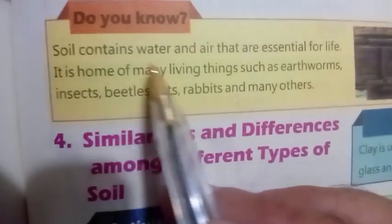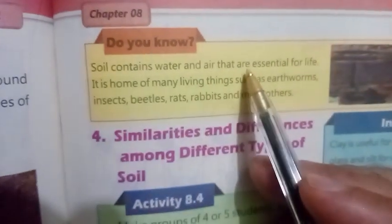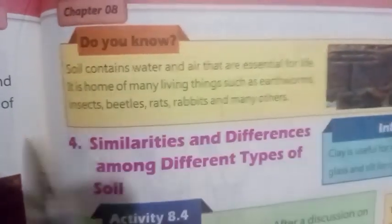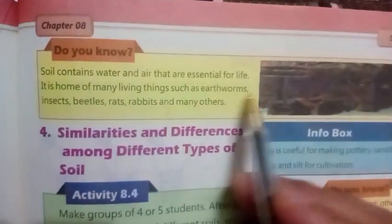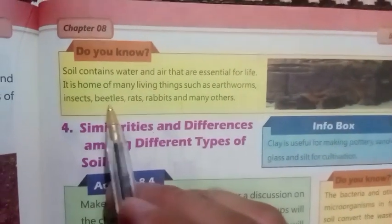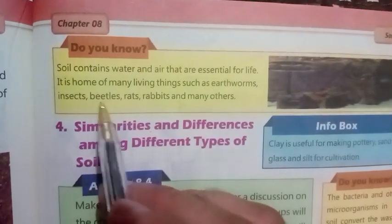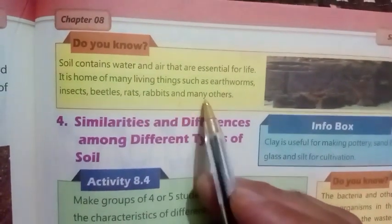Soil contains water and air that are essential for life. It is home to many living things such as earthworms, insects, beetles, rats, rabbits, and many others.